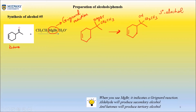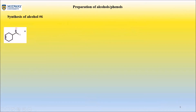So this is a tertiary alcohol. A ketone going through a Grignard reaction produces a tertiary alcohol. Now I'm going to finish up number six on the same video because they are related in some ways and not related in other ways.